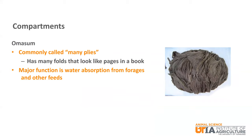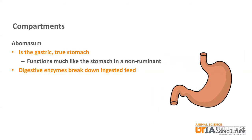Next is the omasum, which is commonly called many plies because it looks like pages in a book. The major function of the omasum is water absorption. The fourth and final compartment is the abomasum, which functions much like the gastric true stomach of the non-ruminant. Digestive enzymes break down ingested feed here.